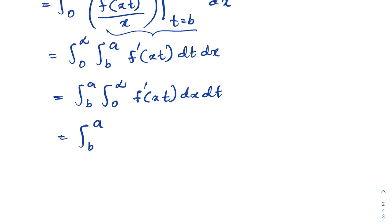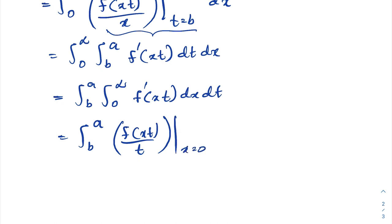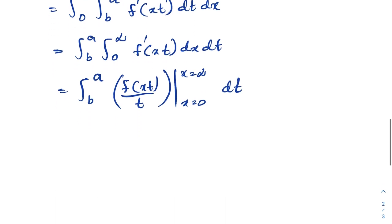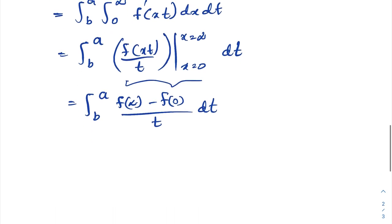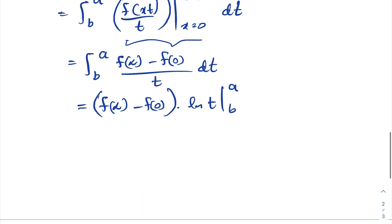Switching the order of integration using Fubini's theorem gives the integral from b to a of the integral from zero to infinity of f'(xt) dx dt. Integrating f'(xt) with respect to x gives f(xt)/t, evaluated from x equals zero to infinity.